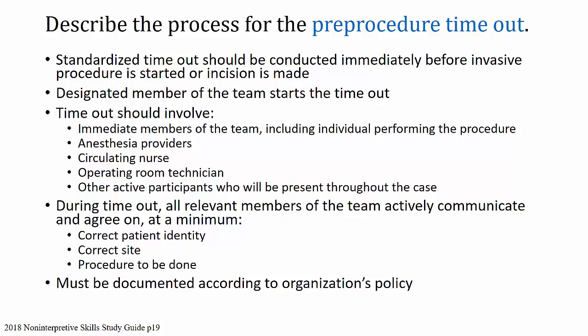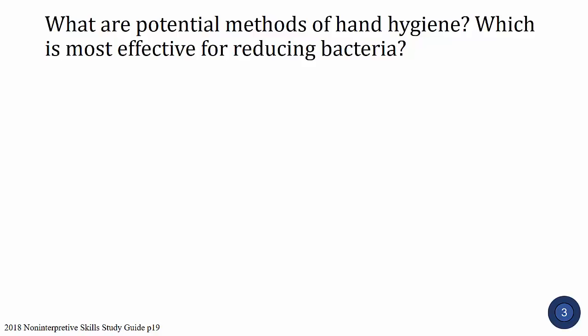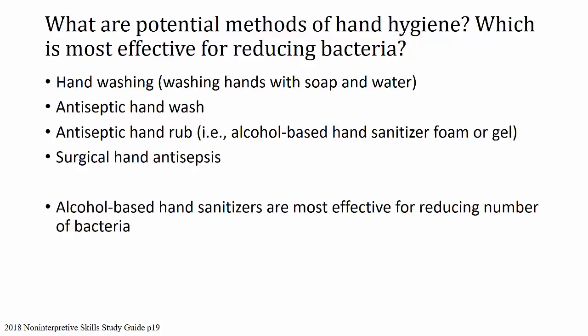Next question: what are potential methods of hand hygiene, and which is most effective for reducing bacteria? Hand hygiene may include hand washing with soap and water, an antiseptic hand wash, an antiseptic hand rub meaning an alcohol-based hand sanitizer foam or gel, or surgical hand antisepsis. Alcohol-based hand sanitizer is the most effective for reducing the number of bacteria.